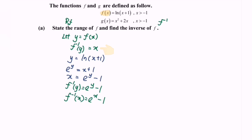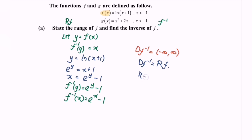So the function f inverse of x is equal to e to the power of x minus 1. Now we determine the domain for f inverse. The domain for f inverse is equal to negative infinity to infinity, where neither endpoint is included. Based on the fundamental relationship, the domain of f inverse is equal to the range of f. So the range of f is negative infinity to infinity.